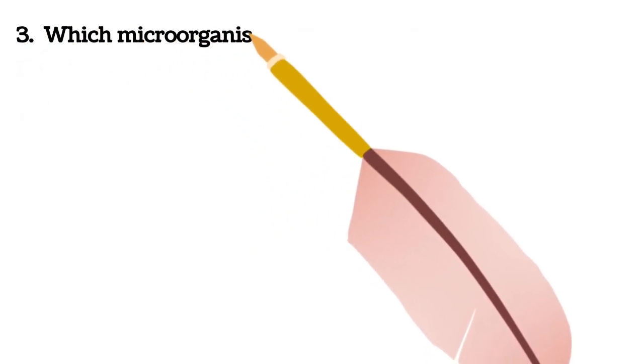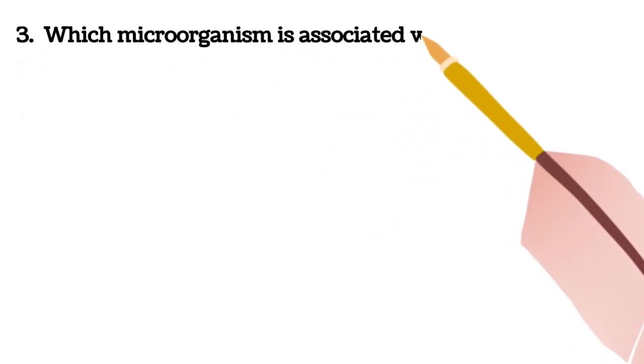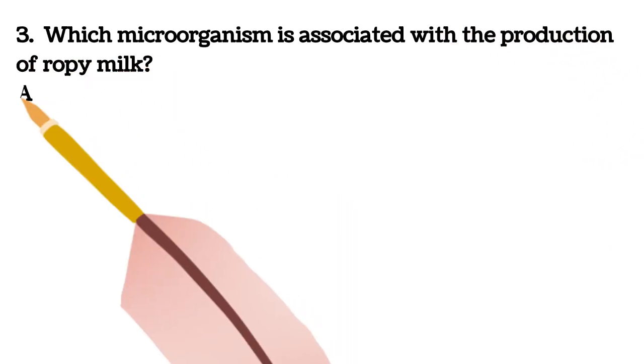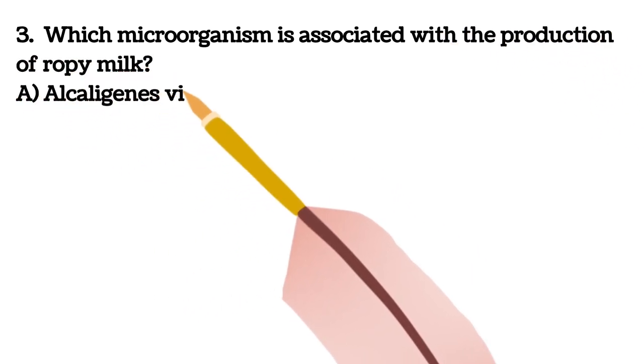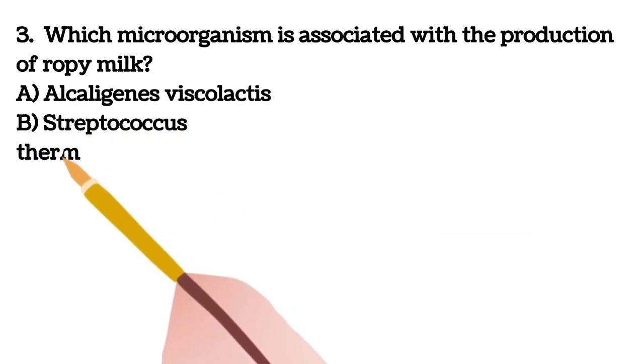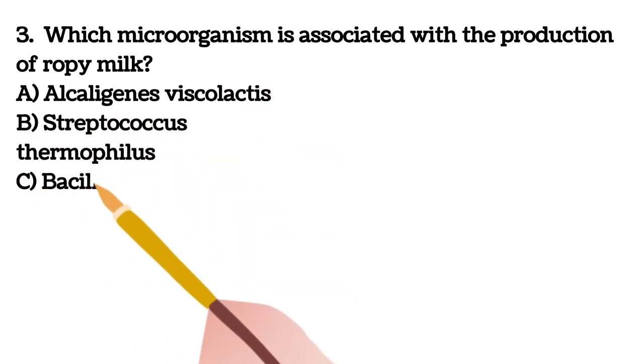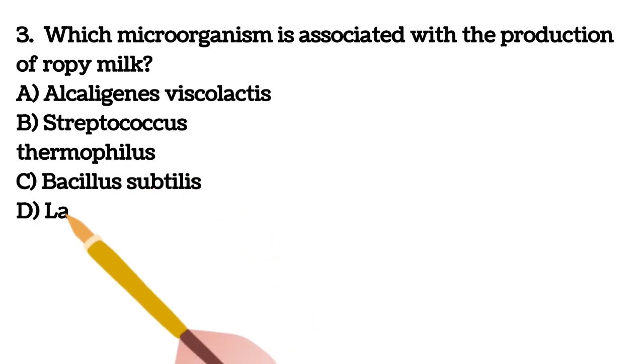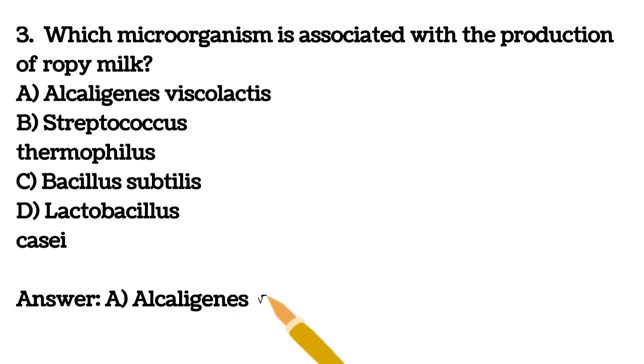Third question. Which microorganism is associated with the production of ropy milk? A. Alcaligenes viscolactis B. Streptococcus thermophilus C. Bacillus subtilis D. Lactobacillus casei. Your answer is A, Alcaligenes viscolactis.